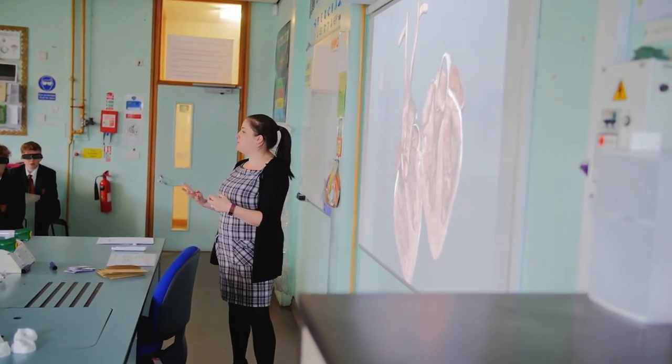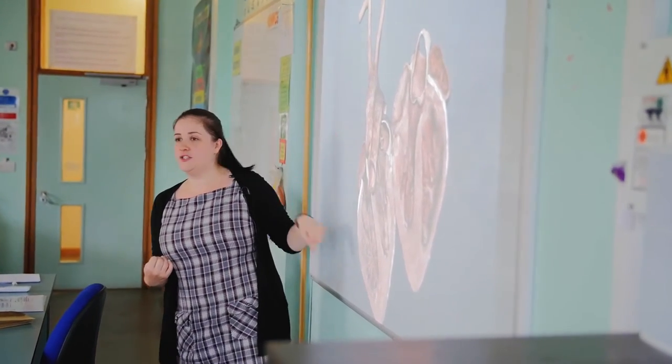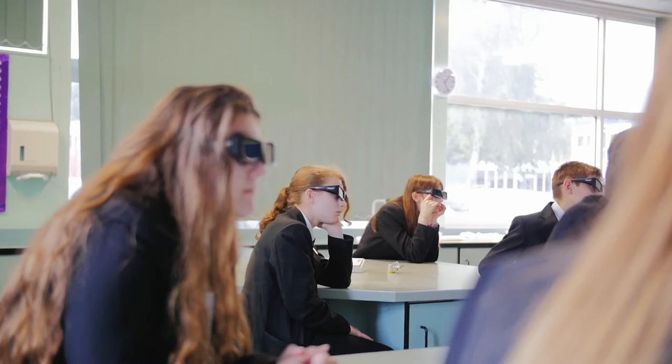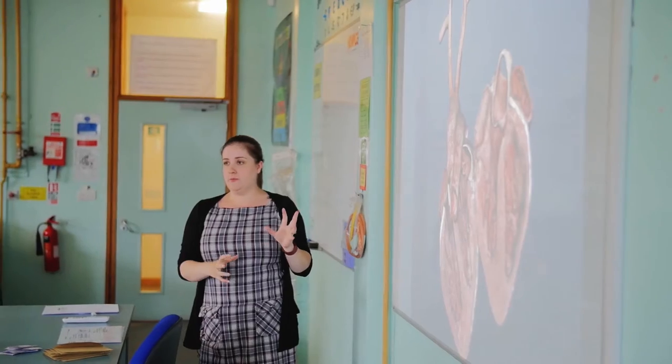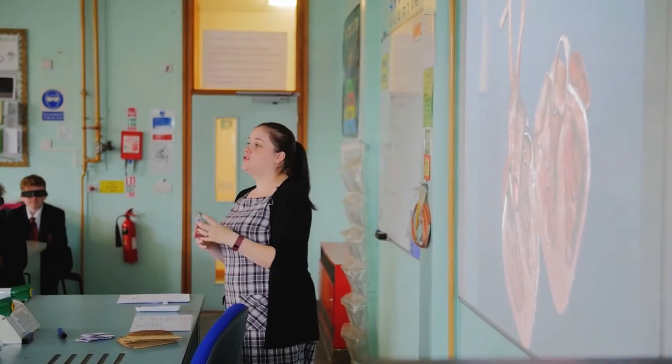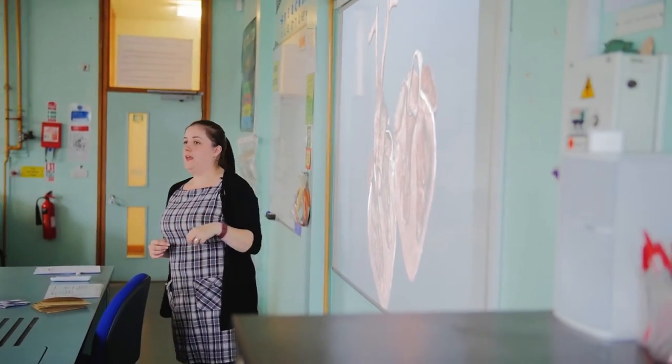We have four chambers to the heart: two atriums and two ventricles. The blood is received into the atriums and it's going to pass into the ventricles. You are going to try and find these parts in your own heart. We're going to leave the labels up on the board for you. Your main tasks are to find the two atria and the two ventricles.